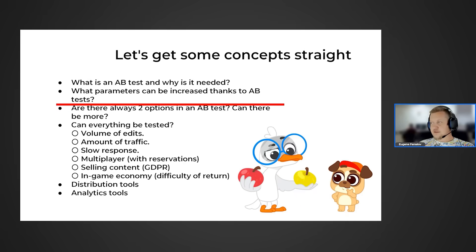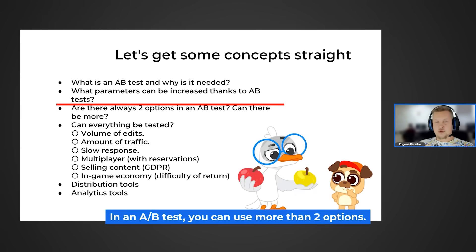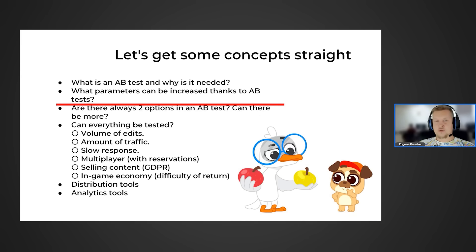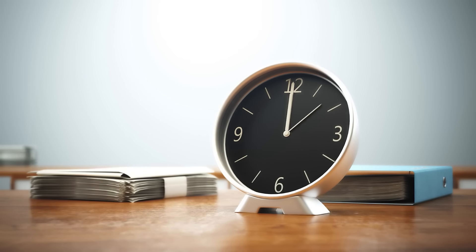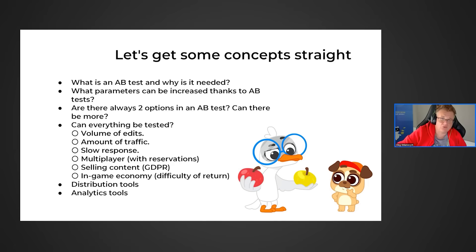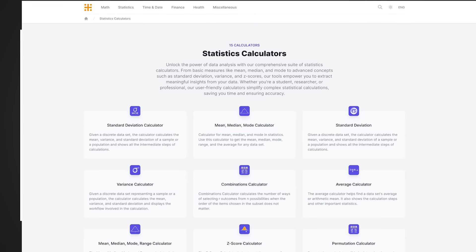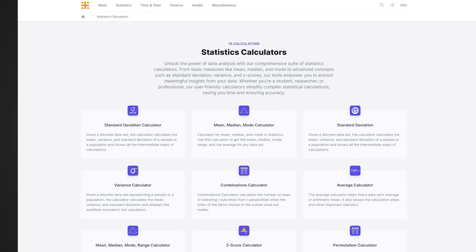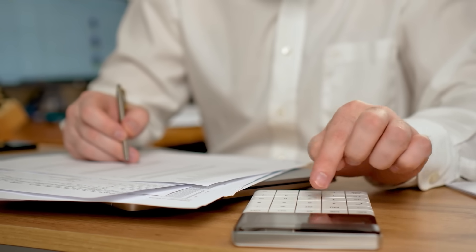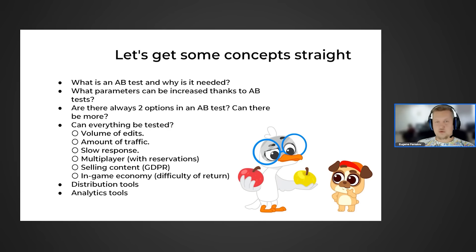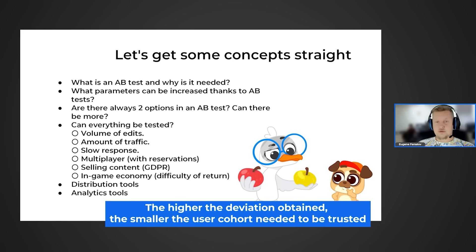Are there always only two variants in A-B testing, or can there be more? Yes, there can be more. You can apply four changes to your product by splitting users into four cohorts, but you increase the waiting time for results in proportion to the number of variants. There are online statistical calculators — you enter the number of people in the cohort and the deviation as a percentage from the baseline. Firebase calculates all these values automatically: the higher the observed deviation, the smaller the cohort needed for the result to be trustworthy.